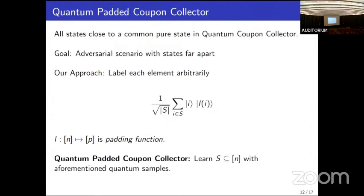The problem of quantum padded coupon collector is to learn S using these padded quantum samples instead of the original ones. Notably, if l is injective and you do not touch the padding register, you effectively trace out that register — since l is injective, this decoheres the entire superposition, reducing it to a classical sample. This is one reason we consider these kinds of samples.